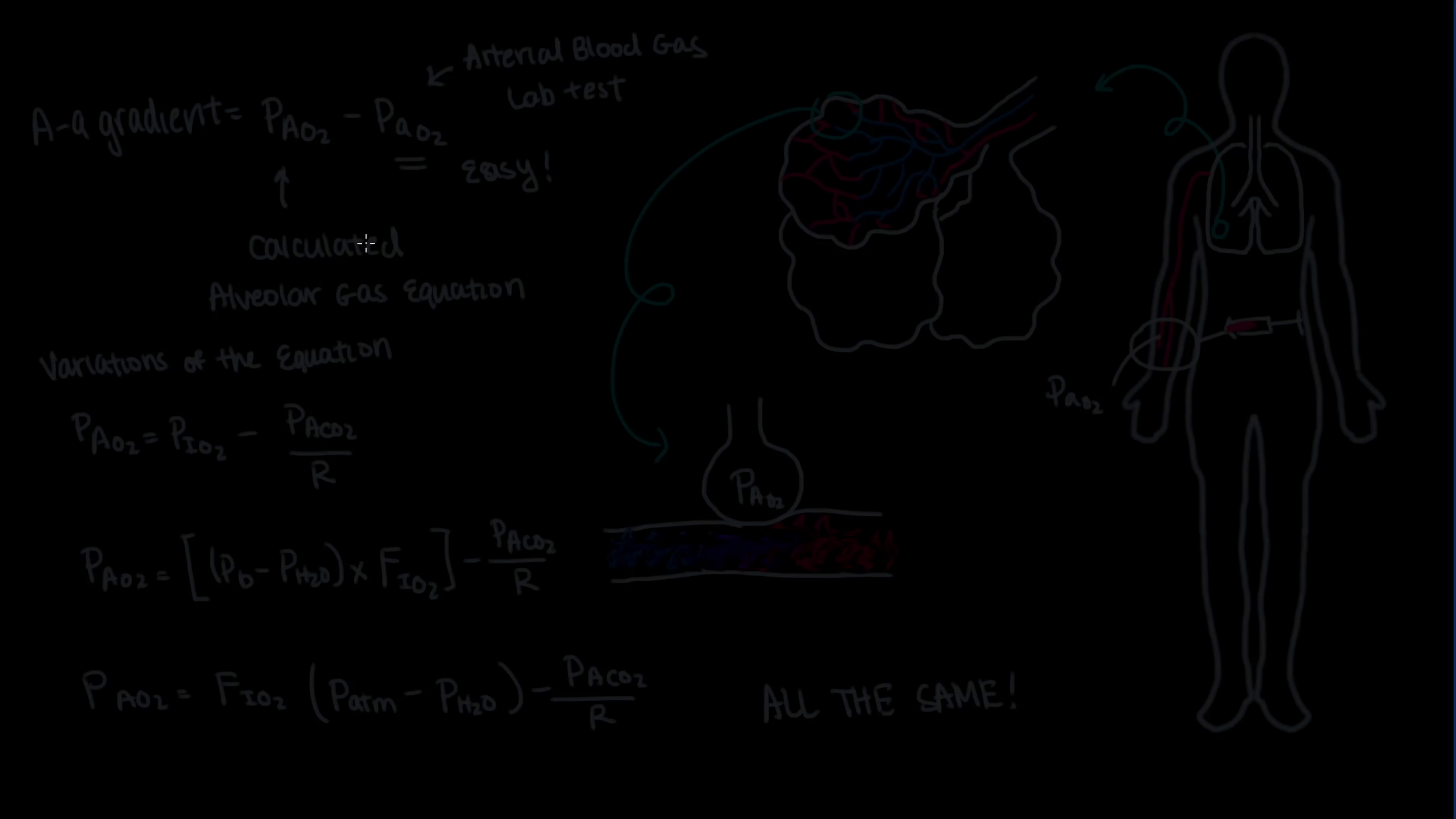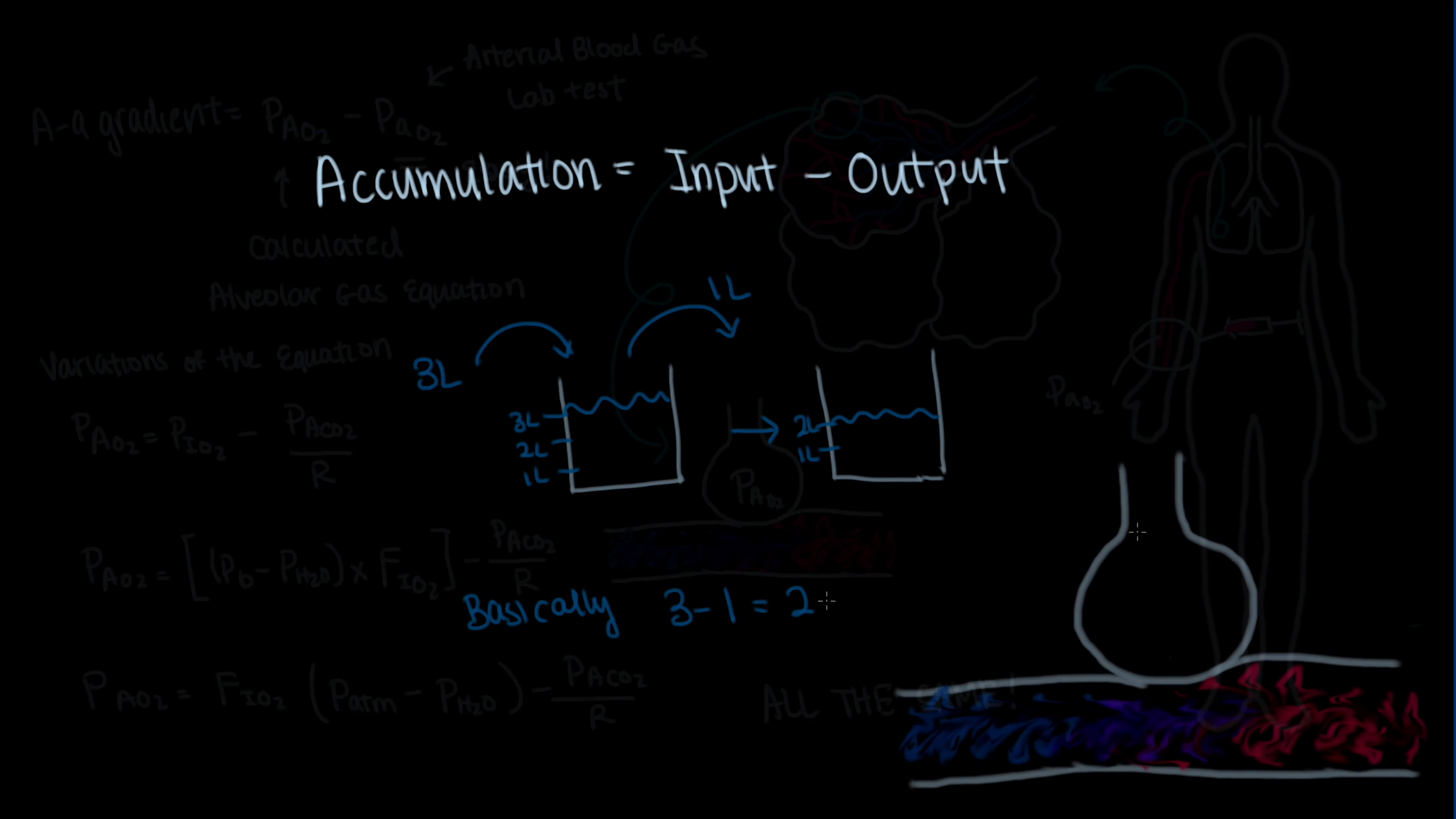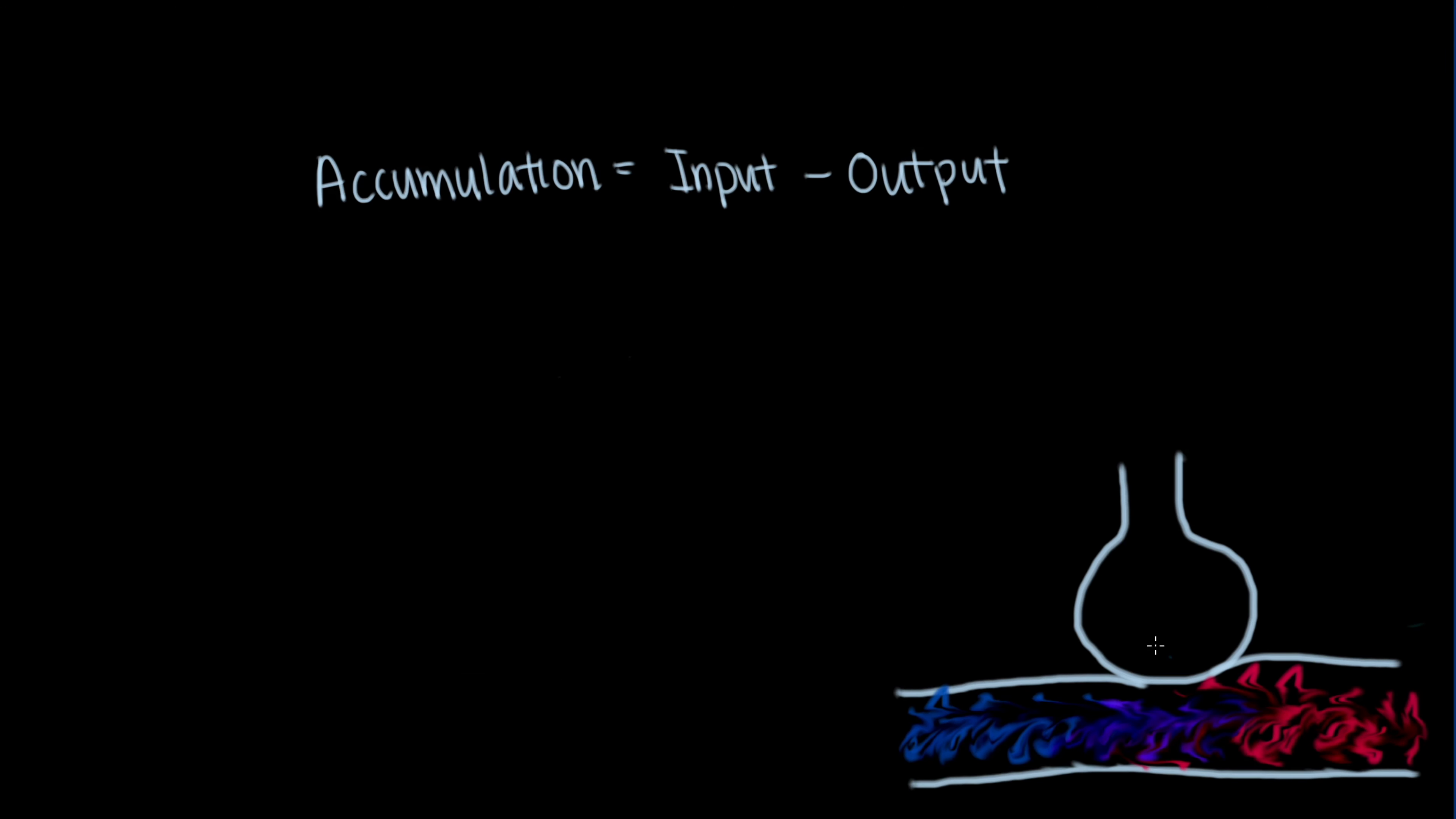I want to start off with a very simple but powerful concept, which is accumulation equals input minus output. A quick easy example of this is if we were to have a container of water and we put 3 liters in it, and then we pour out 1 liter, then what we end up with is 2 liters left, which is the accumulation. The alveolar gas equation is representing this exact same concept.